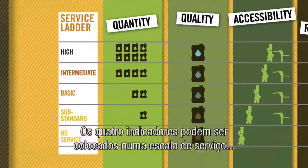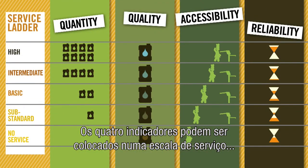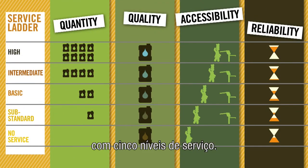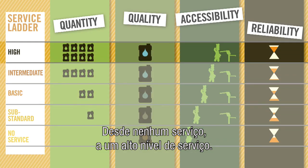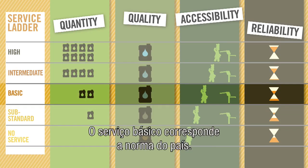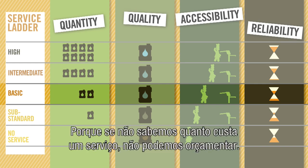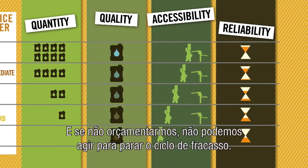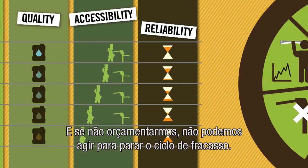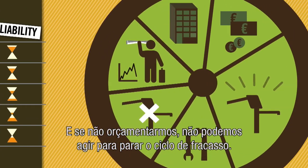The four indicators can be placed in a service ladder with five levels of service, from no service to high service. Basic service corresponds with the norm of the country. Because if we don't know what a service costs, we can't budget. And if we don't budget, we can't act to stop the cycle of failure.